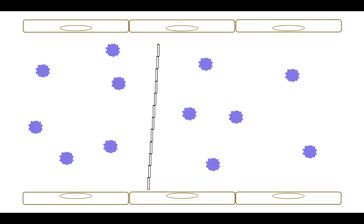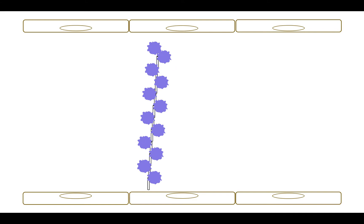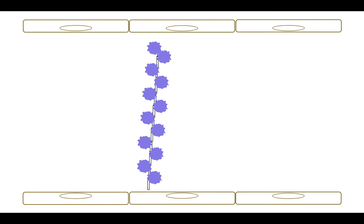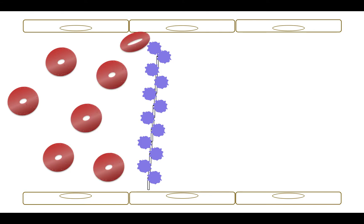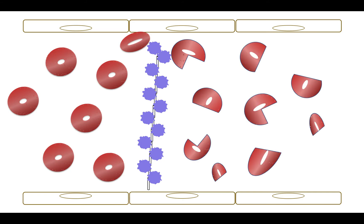Platelets recognize von Willebrand factor and bind to the ultra-large multimers. But now, instead of promoting hemostasis, the combination of ultra-large multimers and platelets leads to the formation of fibrin-rich platelet microthrombi. In forming microthrombi, platelets are consumed, which leads to the clinical finding of thrombocytopenia. Platelet microthrombi typically form in small arterioles and capillaries and can obliterate the vessel lumen. Consequently, red blood cells trying to squeeze through the microvasculature become caught in the fibrin-rich thrombi, causing them to break apart and hemolyze. This hemolysis is classified as microangiopathic because it is occurring in the small blood vessels, and it manifests on the peripheral blood film as schistocytes.